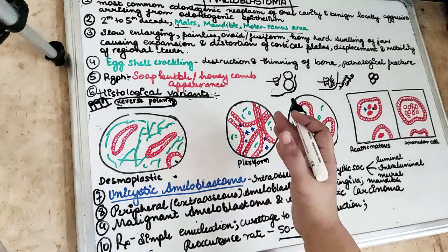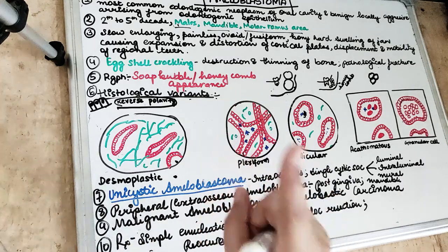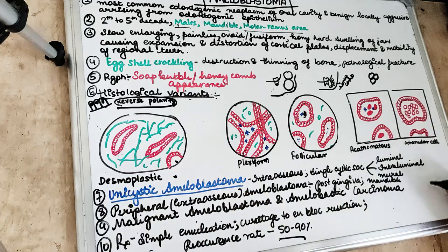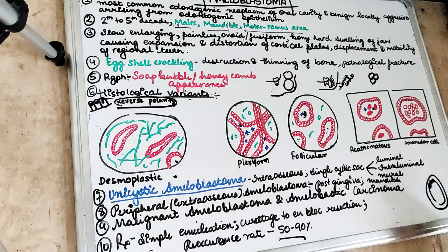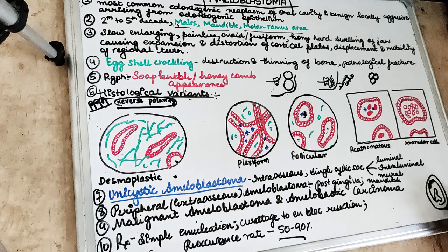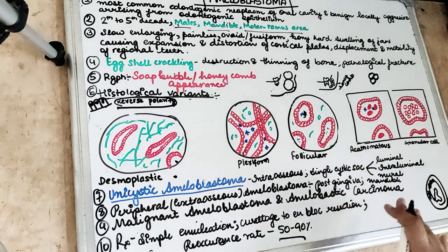Unicystic ameloblastoma usually has only one cystic sac. It also has histological variants: luminal type, where neoplastic cell growth occurs in the lumen space; intraluminal type, where cells project into the lumen; and mural type, where cells are present within the cyst wall.